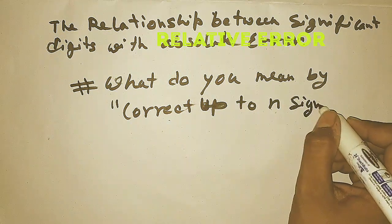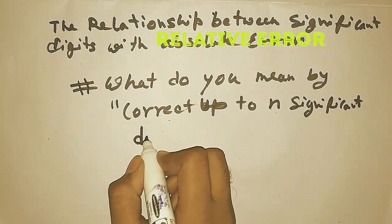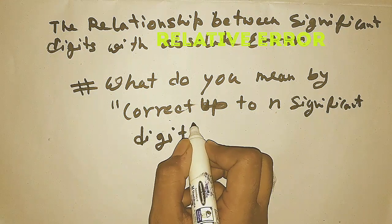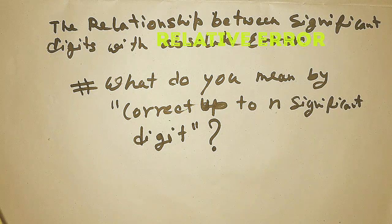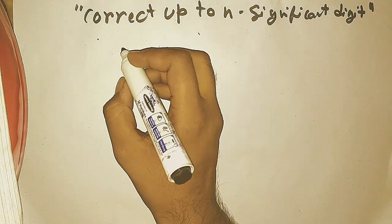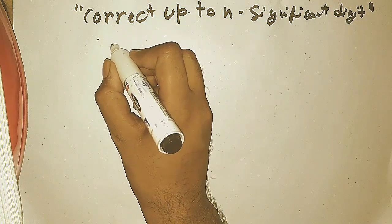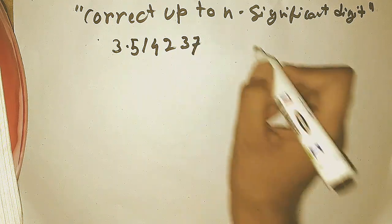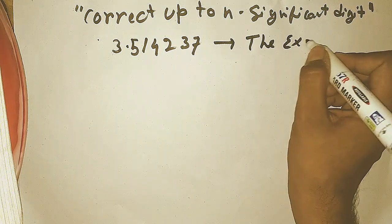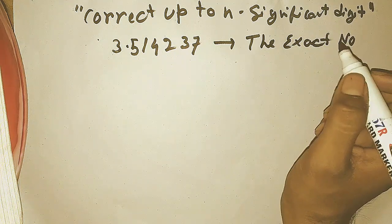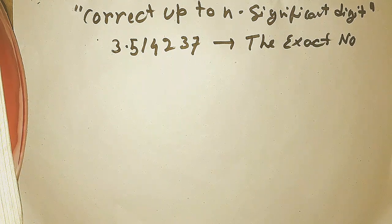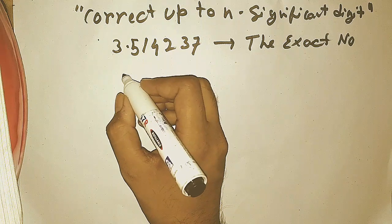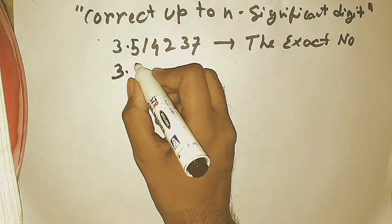Significant digits is nothing but the comparison between the exact number and the approximated number — how much the approximated number is similar to the exact number. From the first digit up to some extent, these are equal. Let this number be the exact number and let us take this as the approximated number.